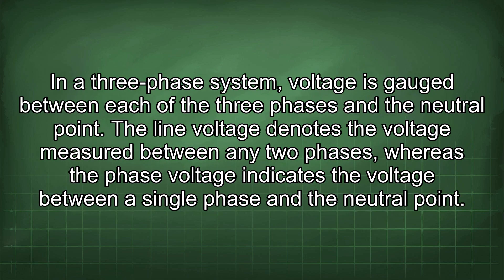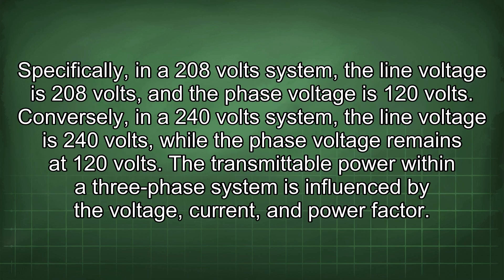In a three-phase system, voltage is gauged between each of the three phases and the neutral point. The line voltage denotes the voltage measured between any two phases, whereas the phase voltage indicates the voltage between a single phase and the neutral point. In a 208-volt system, the line voltage is 208 volts and the phase voltage is 120 volts.